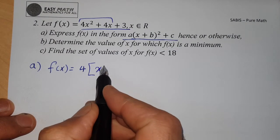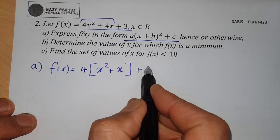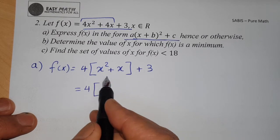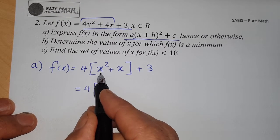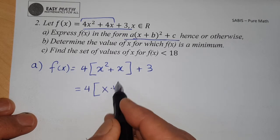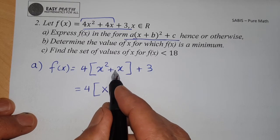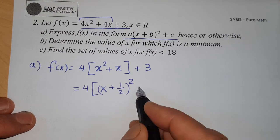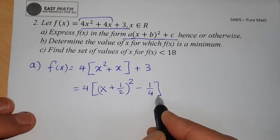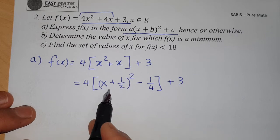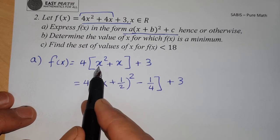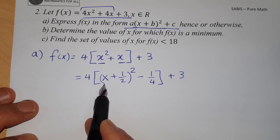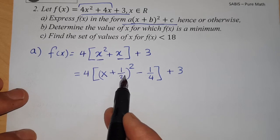To complete the square inside the bracket: take half the coefficient of x, which is 1/2, square it to get 1/4, and write x² + x = (x + 1/2)² − 1/4. So inside the bracket we have (x + 1/2)² − 1/4, which represents the completed square.